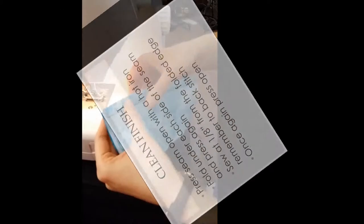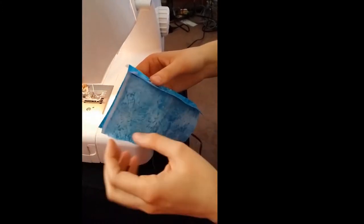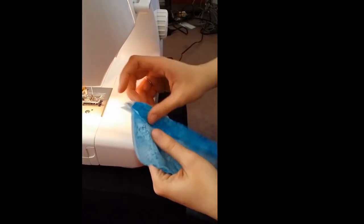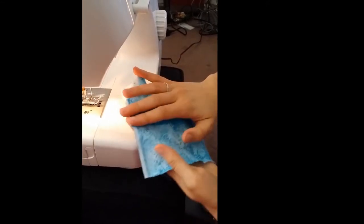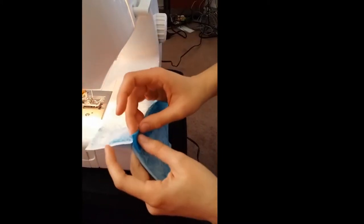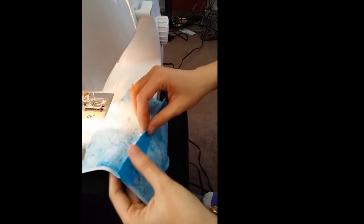Now let's see it together. Here we have our seam ready. So now we take our seam and we press it open. I have already done this with my iron, so make sure you do it with your hot iron. Next, we fold each seam allowance under and press it again.